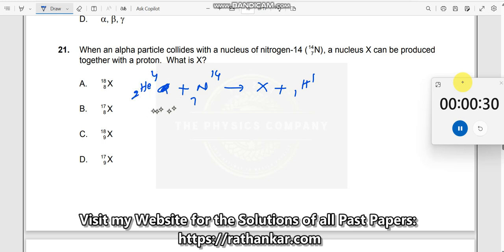2 plus 7 becomes 9 and here it is 1, so this should be 8 over here. 14 plus 4 should become 18 and here we have 1 here, so this should be 17 here. 8X17 should be the answer. B should be 8X17. Just balancing the equation.